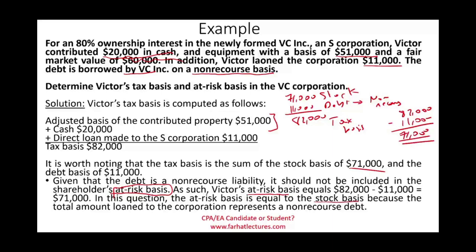The at-risk amount is equal to the stock basis because the total amount loaned to the corporation represents non-recourse debt. Go to Farhat Lectures and look at additional multiple choice, true/false, and exercises to help you understand the difference between stock basis and debt basis, which together equal your tax basis. The tax basis is the first limitation used to absorb losses. Study hard — this topic is important. Good luck and stay safe.